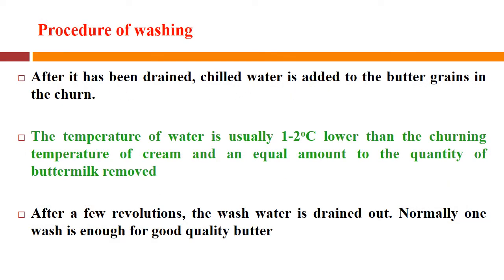After draining, chilled water is added to the butter grains in the churn. The temperature of water is usually 1–2°C lower than the churning temperature of cream, and equal in amount to the quantity of buttermilk removed. After a few revolutions, the wash water is drained out. Normally one wash is enough for good quality butter. The complete process of churning happens in a stainless steel drum; after adding the water, the same revolution is done for washing the butter.